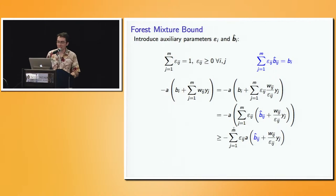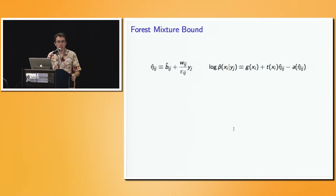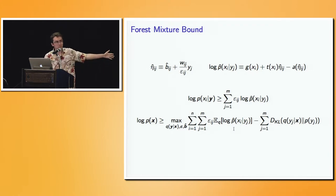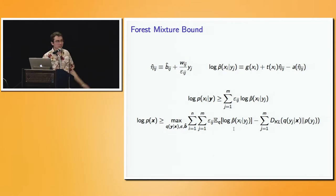We're almost at the end — stay with me. After simplification, these terms have a nice interpretation: I can interpret them as the natural parameters for a new set of expert distributions p-hat with natural parameters eta-hat. When I rewrite the lower bound using this notation, the log conditionals are lower bounded by a weighted average of the log likelihoods of the expert distributions. Plugging this into the ELBO gives the final lower bound on log likelihood — this is the forest mixture bound. We introduced auxiliary parameters epsilon and b-hat, and we optimize over both the variational distribution and these auxiliary parameters.